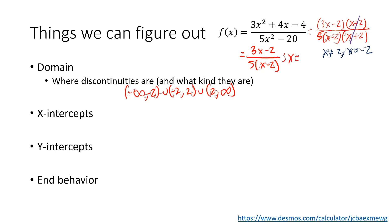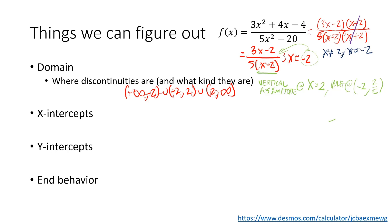In the simplified function, x cannot equal negative 2 is handled: the factor (x minus 2) remains in the denominator, so x equals 2 is a vertical asymptote. The cancelled factor (x plus 2) means x equals negative 2 creates a hole. Plugging negative 2 into the simplified function gives the hole's location at (negative 2, 2/5).